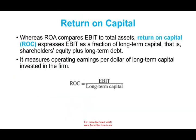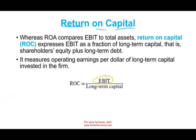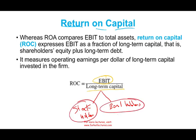Let's take a look at another ratio called return on capital. Return is EBIT, and we're dividing EBIT by long-term capital. Long-term capital is the money invested by stockholders and bondholders for the long term. You're looking at how well you are utilizing the money provided by capital providers — stockholders and bondholders — in generating more profit. Return on capital expresses EBIT as a fraction of long-term capital, which is stockholders' equity plus long-term debt, measuring operating earnings per dollar of long-term capital.